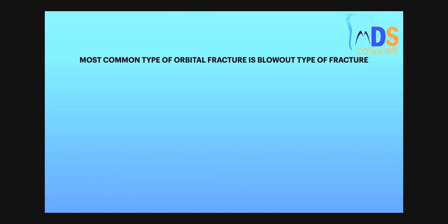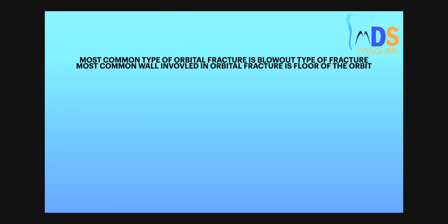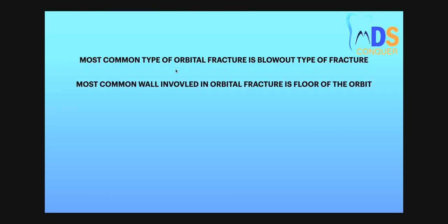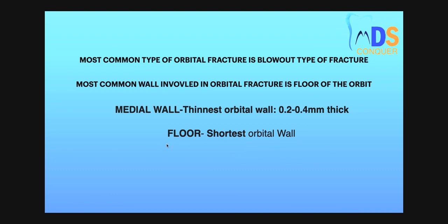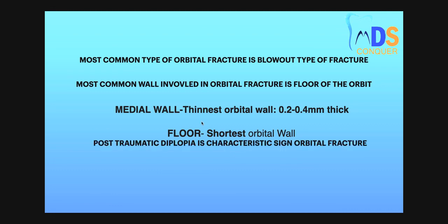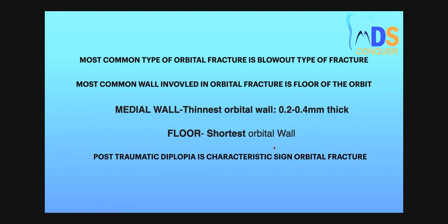Coming to the first point, which is very important: the most common type of orbital fracture is the blowout type of fracture. The most common wall involved in the orbit fracture is the floor of the orbit. The thinnest wall of the orbit is the medial wall, with a thickness of around 0.2 to 0.4 mm. The shortest wall of the orbit is the floor, and the characteristic sign of orbital fracture is post-traumatic diplopia.